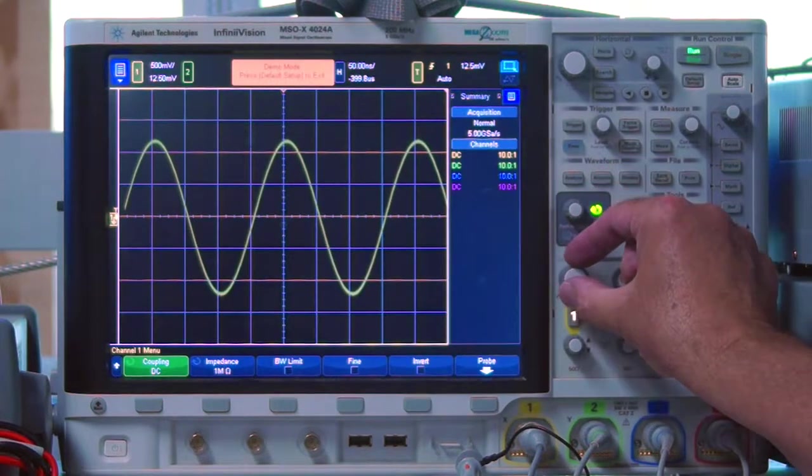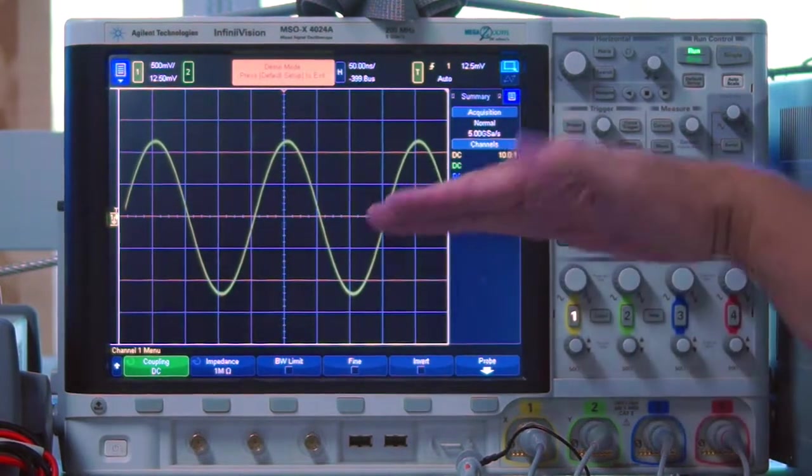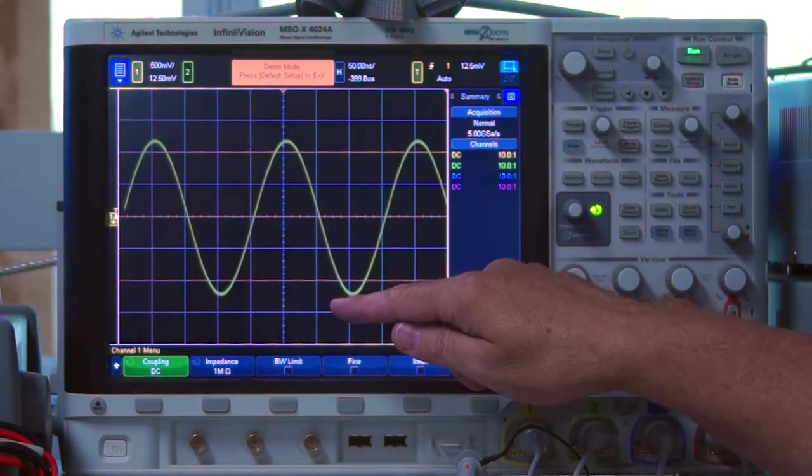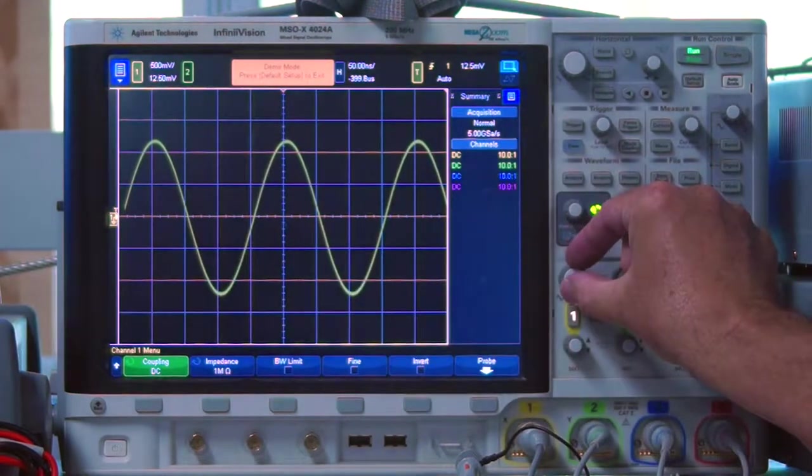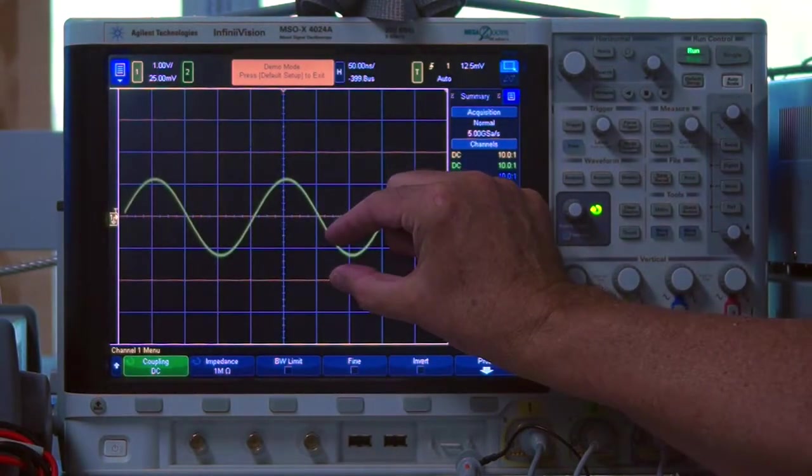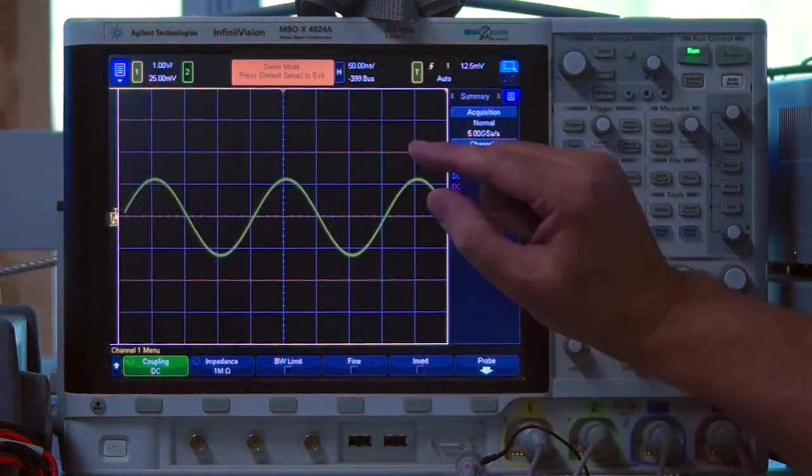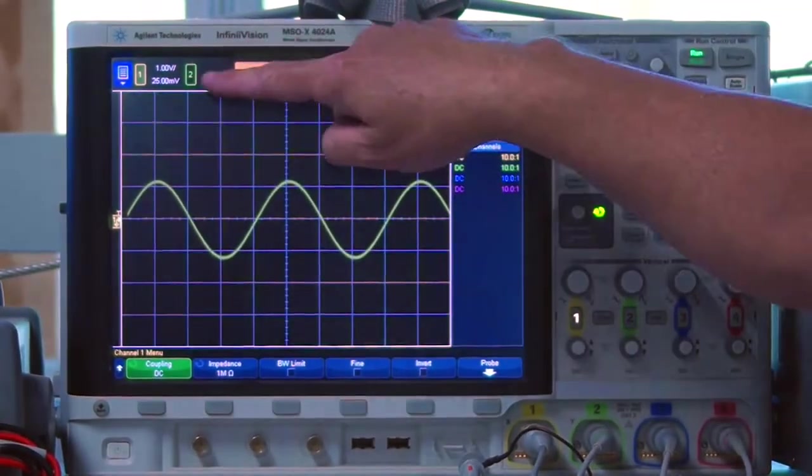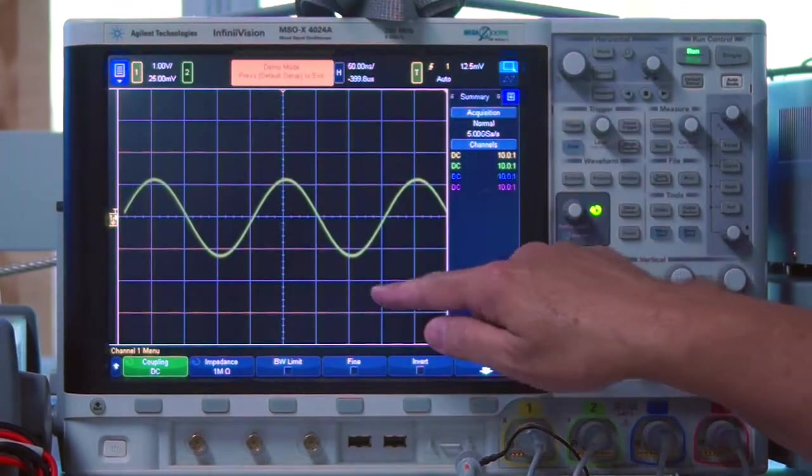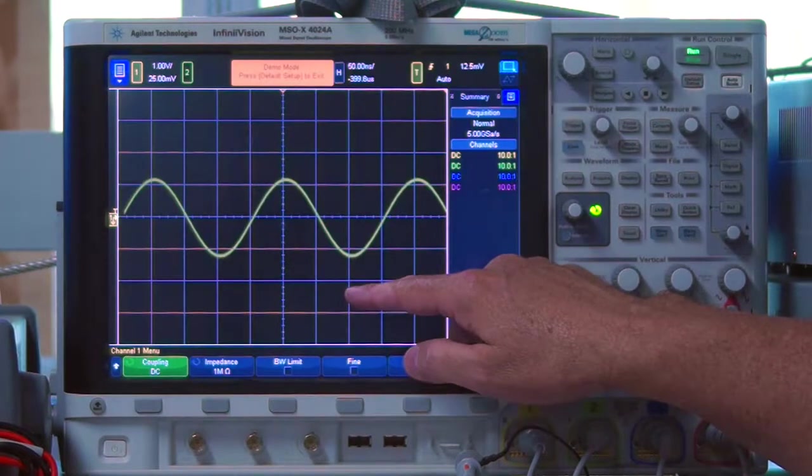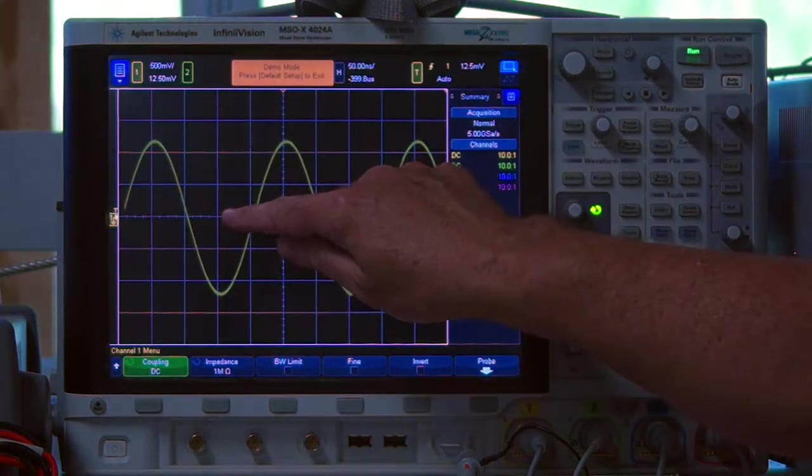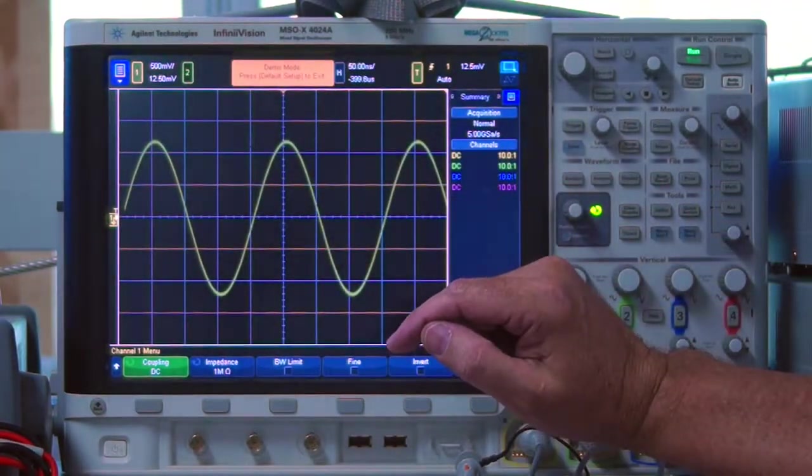The second knob that we have is the volts per division. And you notice that my screen is divided into these little vertical divisions. And so when I adjust this knob, what it does is it changes not only the size of the signal, but it changes how much each one of those divisions is worth. In this particular case where I have the knob set right now, even though you may not be able to see it, it tells me on the scope that that is one volt for each one of these divisions. If I adjust the knob to make my signal bigger, now it's telling me that each one of these divisions is 500 millivolts.